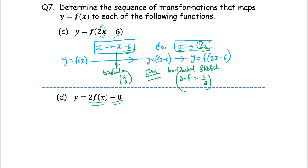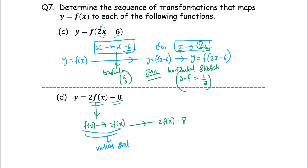Then you want to make a vertical stretch with scale factor 2. Followed by a vertical translation with translation vector (0, -8).